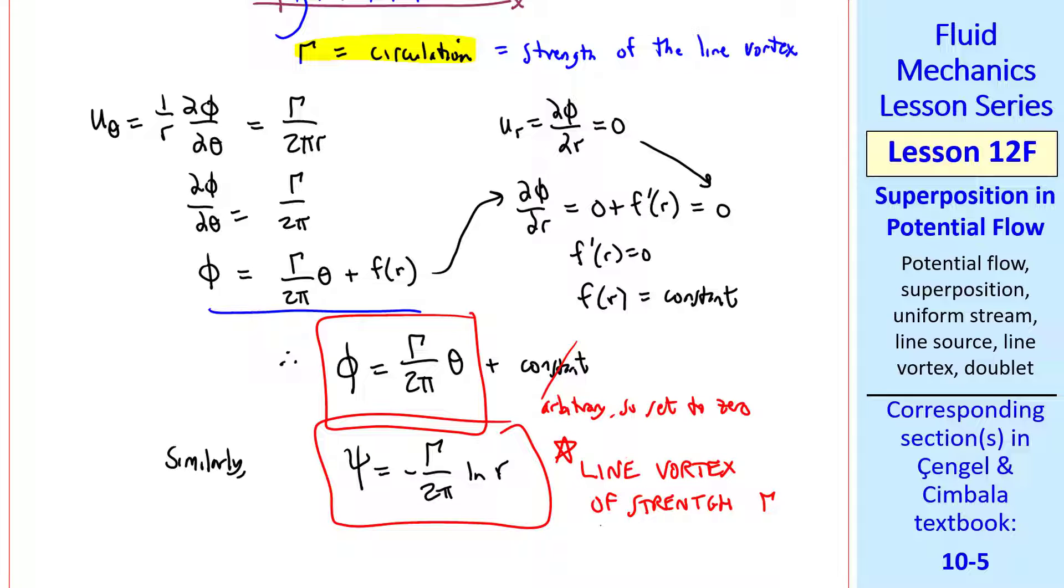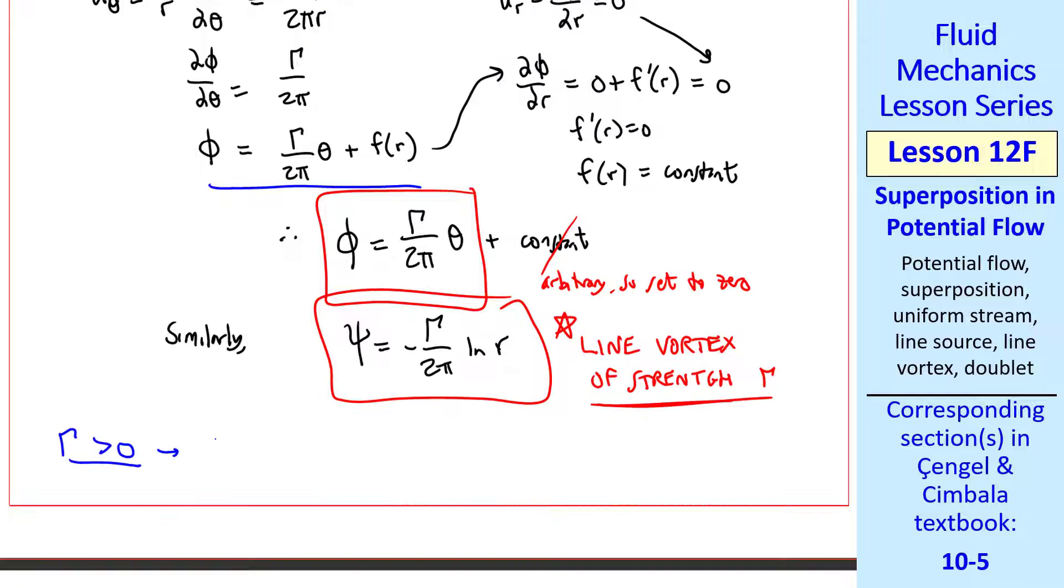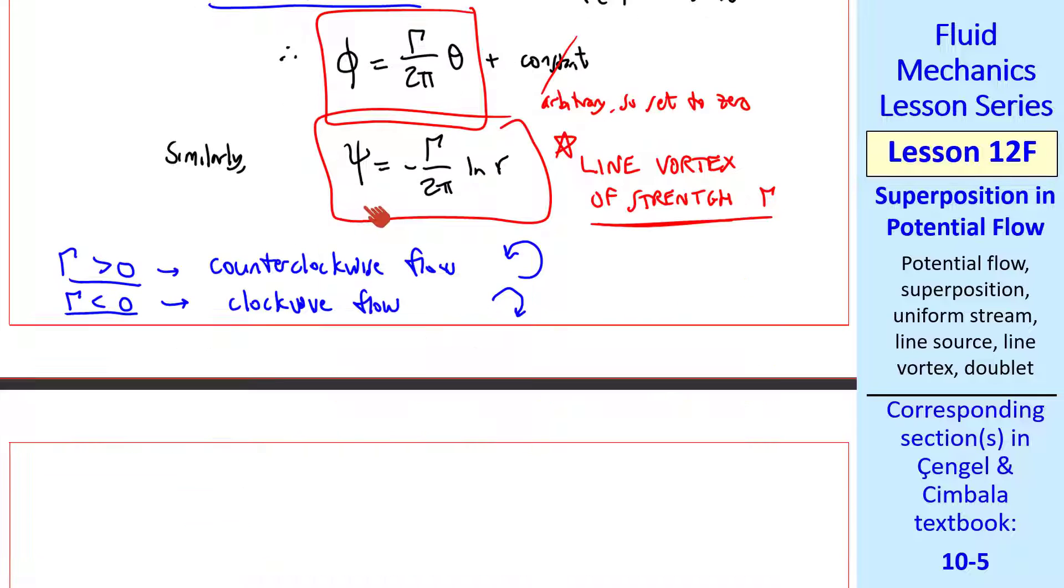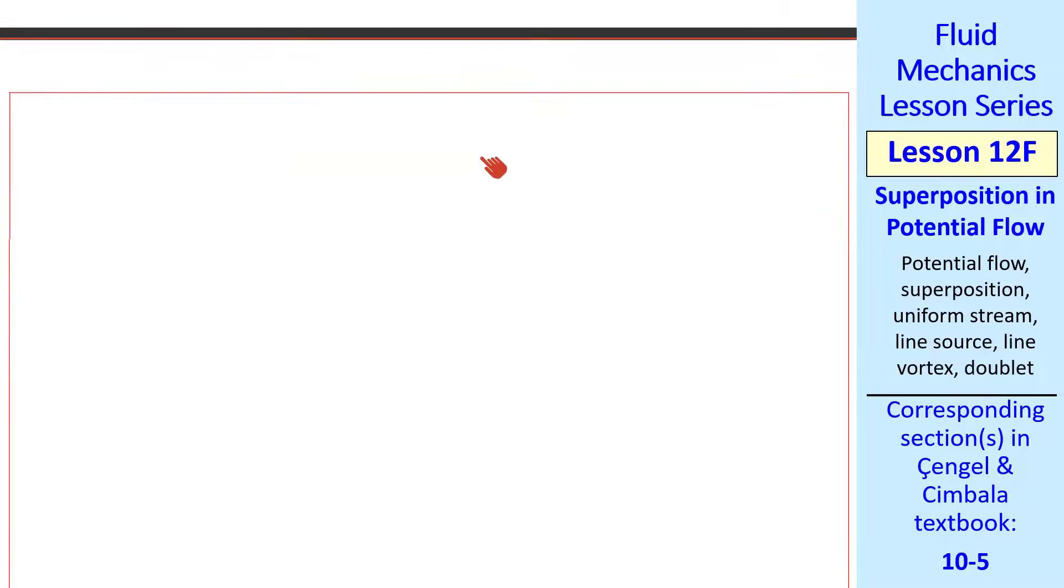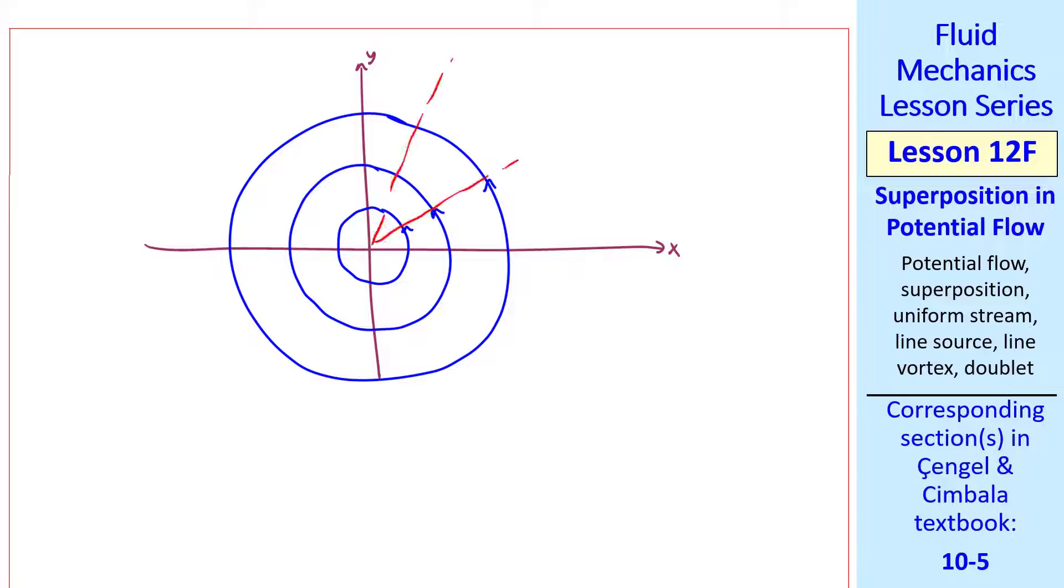So these are the equations for a line vortex of strength gamma. If gamma is greater than 0, we have counterclockwise flow, which is mathematically positive. And if gamma is less than 0, the flow is clockwise, or mathematically negative. We can see that curves of constant psi are curves where r equal a constant, or circles. And curves of constant phi are curves of theta equal constant, and these are just rays. So I can sketch equipotential lines and streamlines as follows.